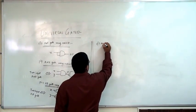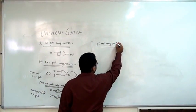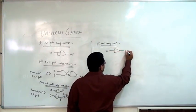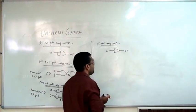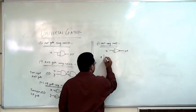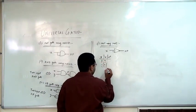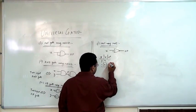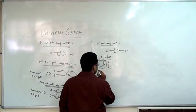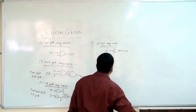For NOT gate using NOR: again I short the two inputs of the NOR gate. The NOR truth table was 0-0→1, 0-1→0, 1-0→0, 1-1→0. Extracting the rows where both inputs are the same — given 0 the output is 1, given 1 the output is 0 — this behaves exactly like a NOT gate.